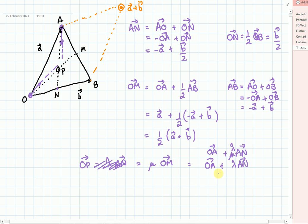So now, let's have a look at rearranging all of this and solving. So OM, we've got mu times a half of A plus B, is equal to OA, which is vector A, plus some value lambda times AN, which is minus A plus B over 2.